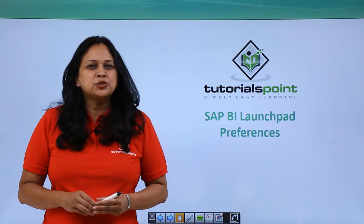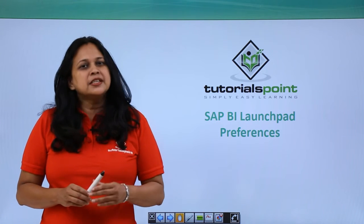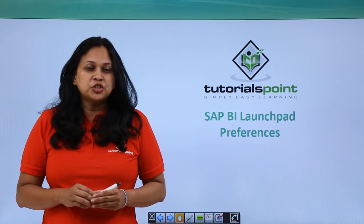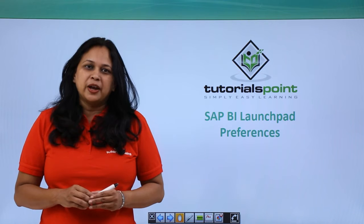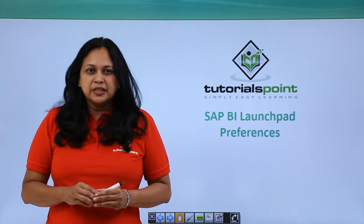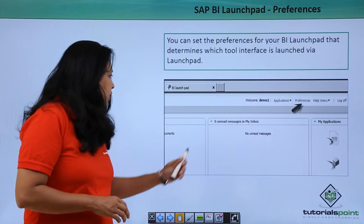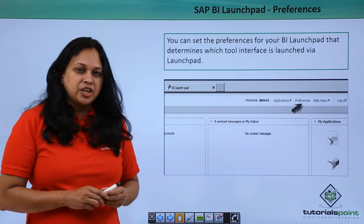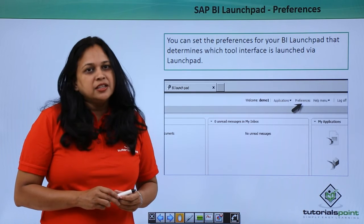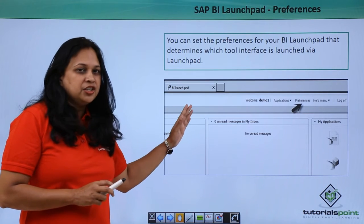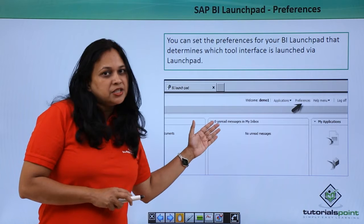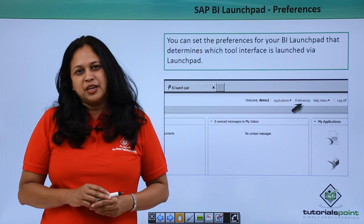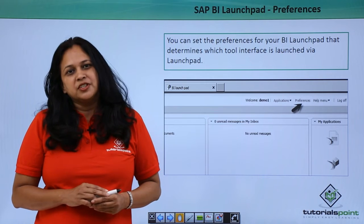In this video, we will see how to set the preferences. You can set the preference for your BI launchpad that determines which tool interface is launched. Under preferences, you have different tabs: general, time zone, and tool-specific preferences for Analysis Edition for OLAP, Web Intelligence, Workspaces, and Crystal Reports. Let us go to SAP BI launchpad and see what the different preference options are.